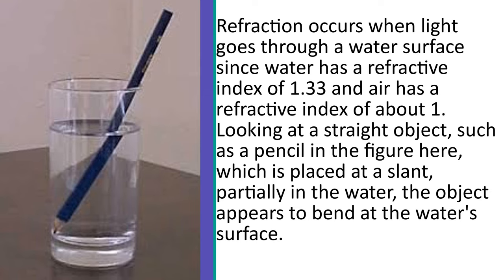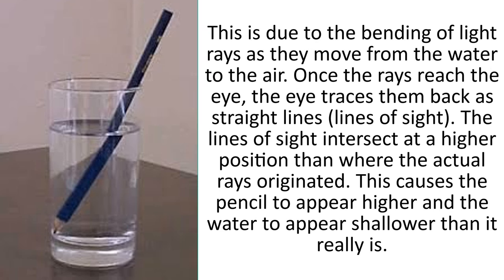Looking at a straight object, such as a pencil in the figure here, which is placed at a slant, partially in the water, the object appears to bend at the water's surface. This is due to the bending of light rays as they move from the water to the air. Once the rays reach the eye, the eye traces them back as straight lines, lines of sight. The lines of sight intersect at a higher position than where the actual rays originated. This causes the pencil to appear higher and the water to appear shallower than it really is.